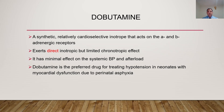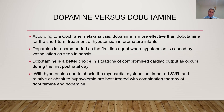Dobutamine is the preferred drug for treating hypotension with myocardial dysfunction due to perinatal asphyxia. According to meta-analysis, dopamine is more effective than dobutamine for short-term treatment of hypotension in preterm neonates. Dopamine is recommended as first-line when hypotension is caused by vasodilation, as seen in sepsis, while dobutamine is a better choice in situations of compromised cardiac output, such as on the first postnatal day of life.